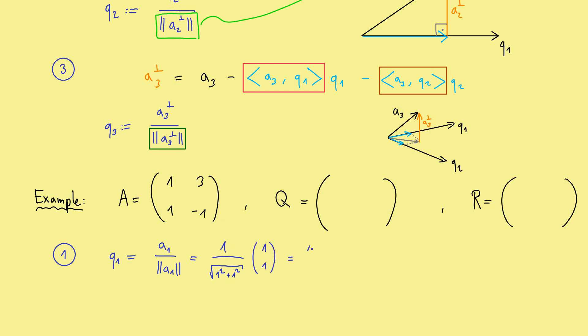And this is the number we put into R. Here. And the full vector we can put into Q as well. So, this would be 1 divided by the square root of 2, and here as well.